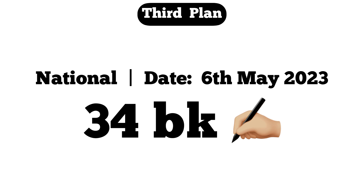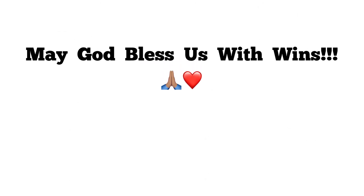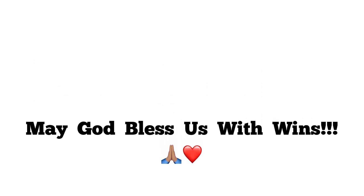The following week from there, which is today — national 6th May 2023 — we have 34 as our live banker. I have a full game to share with you guys, and we're praying God Almighty is going to grant us winning. The full game for national lotto today, 6th May 2023: we have 34 as our main banker with a two-sure: 34 and 86, perm with 34, 86, 90, 68, and 10. I'll come again and post a standby game to try small in the afternoon — same as last week. This is the main game, let's try it and we're hoping God Almighty is going to bless us with winning. Thank you guys for watching, subscribe to the channel and stay active for more content.